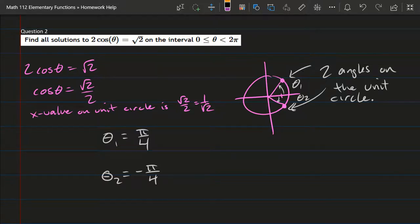Find all solutions to 2 cosθ equals square root 2. It is important to notice the interval they want our solutions to live on, which is 0 to 2π. So that's basically the first one rotation around the unit circle.